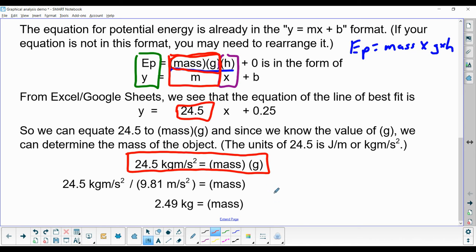All this we were able to find by equating our slope-intercept format equation, y equals mx plus b, to our physics equation, Ep equals mgh.